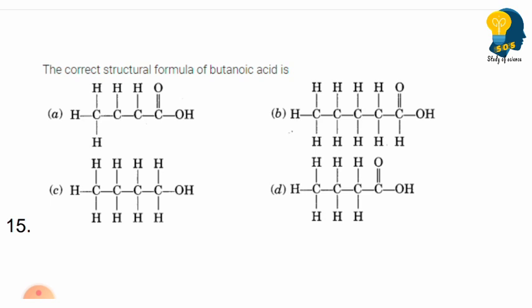Next question: The correct structural formula of butanoic acid is — carefully observe options A, B, C, and D and identify which option depicts the structural formula of butanoic acid. Count the carbon atoms and identify the functional group. It is very easy to identify once you write the structure.